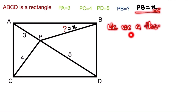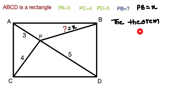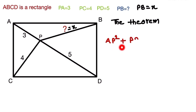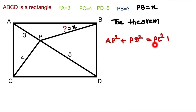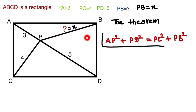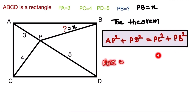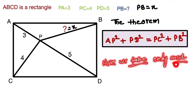To find the value of x, we use a theorem of the rectangle. The theorem states: AP² plus PD² is equal to PC² plus PB². We will first show you the proof of this theorem, then solve the question.